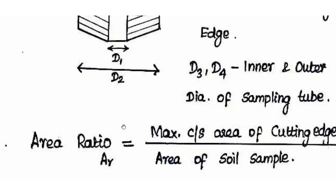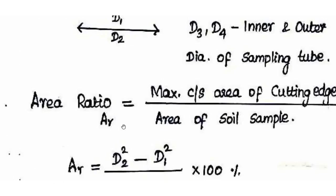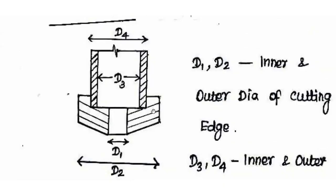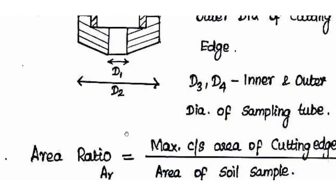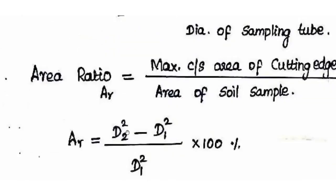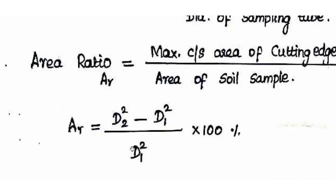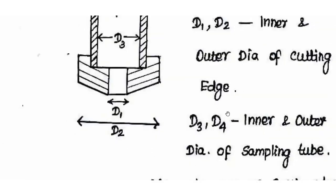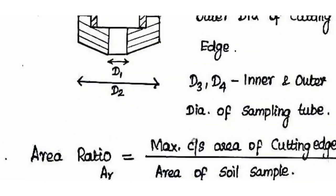The area ratio is the maximum cross-sectional area of the cutting edge divided by the area of the soil sample. For the sampler, it is D1 and D2. D1 is the inner diameter of the cutting edge and D2 is the outer diameter. That is D2 squared minus D1 squared, divided by D1 squared — this is the soil sample area. This is the area ratio formula.